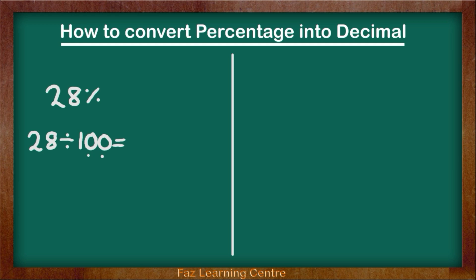I am going to write the number 28 again. Every whole number you can bring in a decimal anytime you like, so I am going to bring mine in now. Because I am converting this into a decimal I am making the number smaller, as it says 28 divided by 100. So I am going to move my decimal towards the left 2 times, because I have 2 zeros.